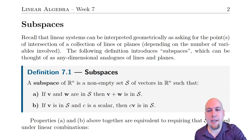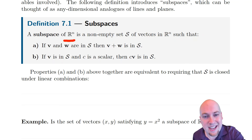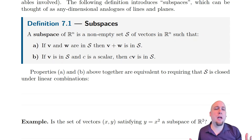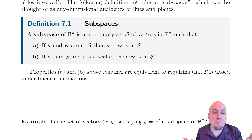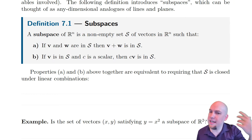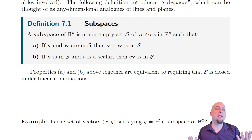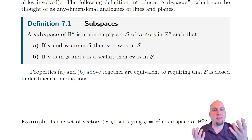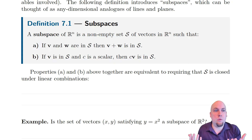So what is a subspace? It's a set of vectors in Rn that has two properties. The first property is that if you take any two vectors in that set and add them up, the result is still in that set — so if V and W are in the set, then V plus W has to be in the set. The second property is that if V is in the set and C is any scalar (a real number), then C times V has to be in that set.